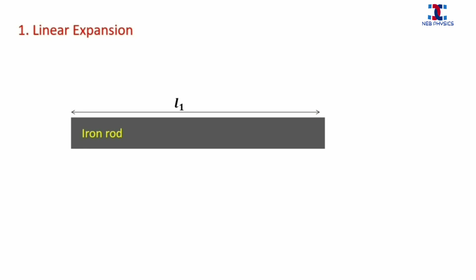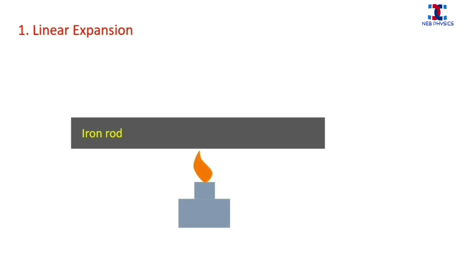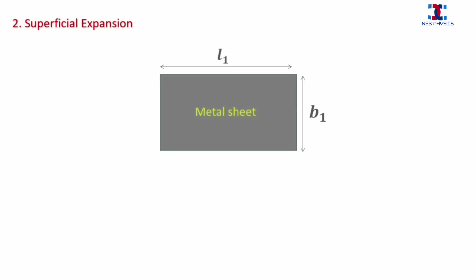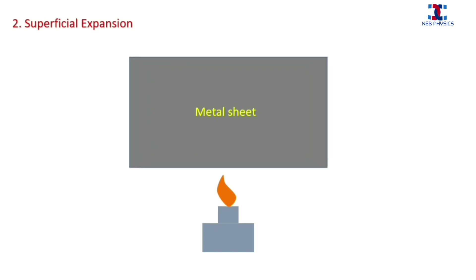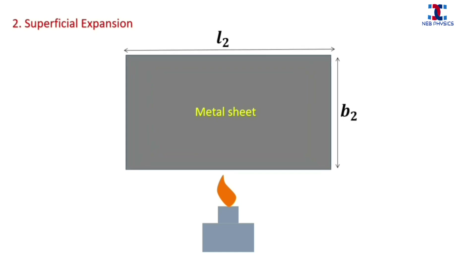In linear expansion, substances like an iron rod, when heated, increase in length. Thermal expansion in two dimensions is also called superficial expansion. In superficial expansion, a thin metal sheet when heated increases in both length and breadth, resulting in an increase in area.